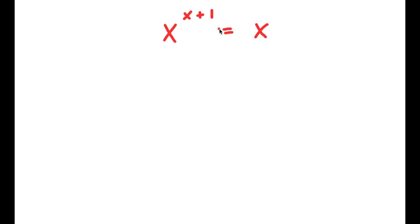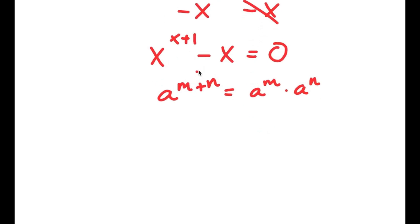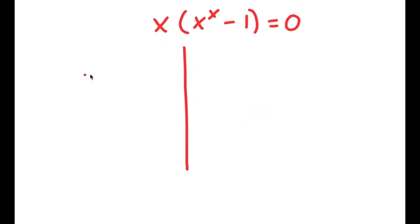In this problem, I have x to the power of x plus 1 is equal to x. So to solve this, I'm going to start by subtracting x on both sides, leaving x to the power of x plus 1 minus x is equal to 0. Now if I have something in the form a to the power of m plus n, this equals a to the power of m times a to the power of n. So x to the power of x plus 1 becomes x to the power of x times x to the power of 1. Then if I factor out x, I get x times x to the power of x minus 1 equals 0. So now this gives me two equations: x equals 0, and x to the power of x minus 1 equals 0.